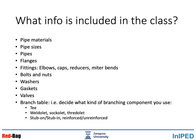What information is included in the pipe class? We have lots of information such as pipe materials, pipe sizes, pipes, flanges, fittings such as elbows, caps, reducers, meter bends, bolts and nuts, washers, gaskets, and valves. We also have the branch table that tells you what kind of branching component you should use.